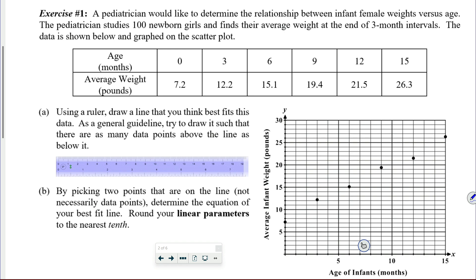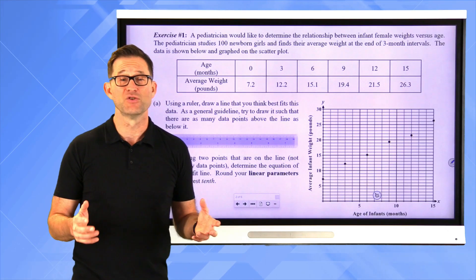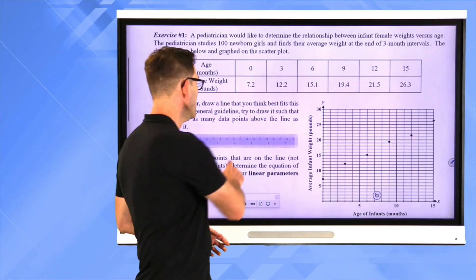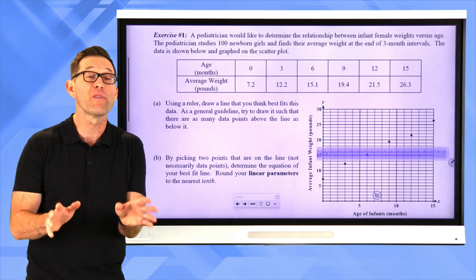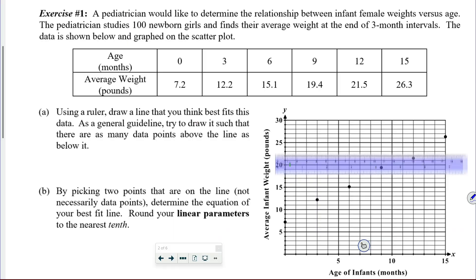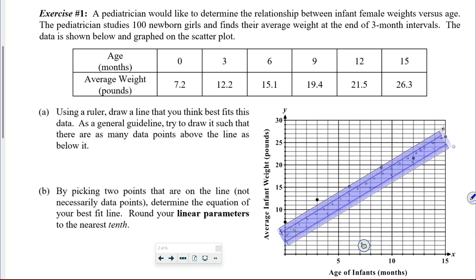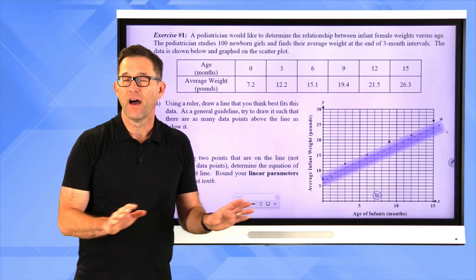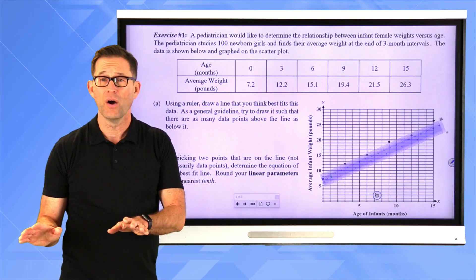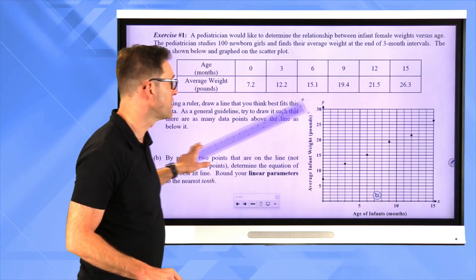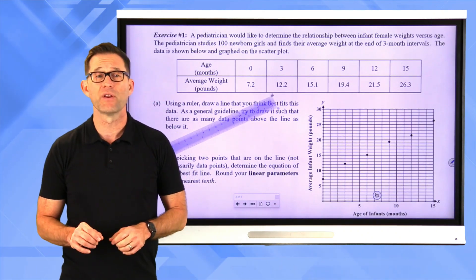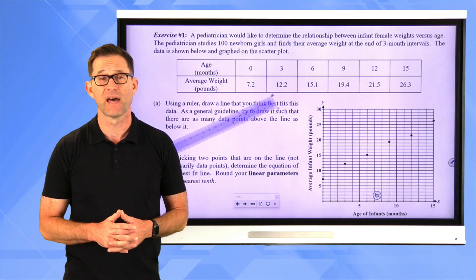Letter A: Using a ruler, draw a line that you think best fits this data. As a general guideline, try to draw it such that there are as many data points above the line as there are below it. You also want to make sure the line you're drawing has roughly the same slope as the data trend. I've got some data points above the line and some below it. Go ahead and pause the video now and try to draw a best fit line that you think fits the data pretty well.